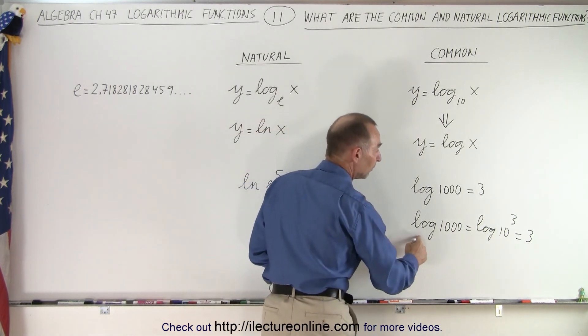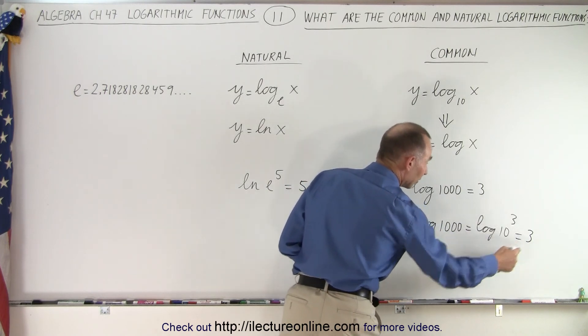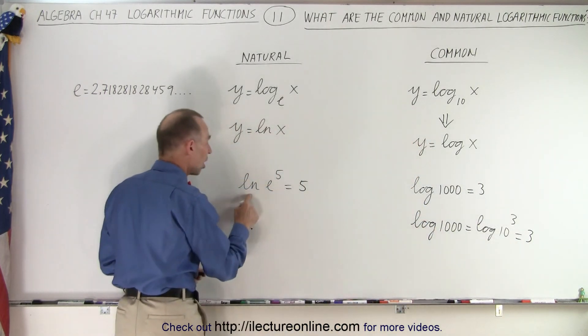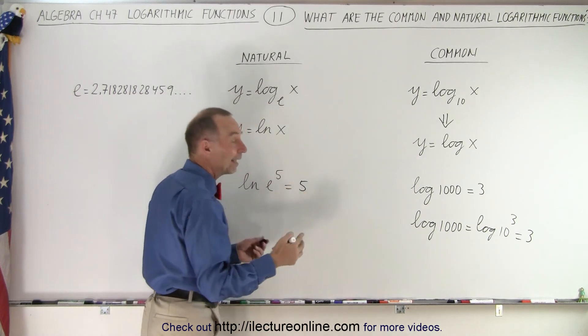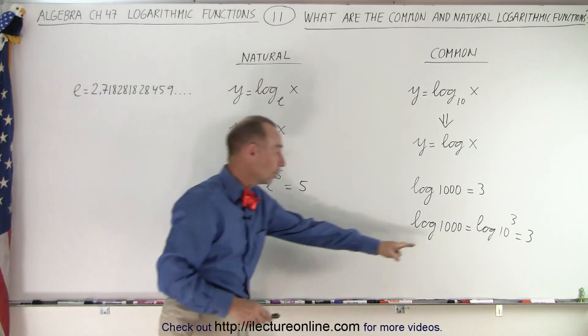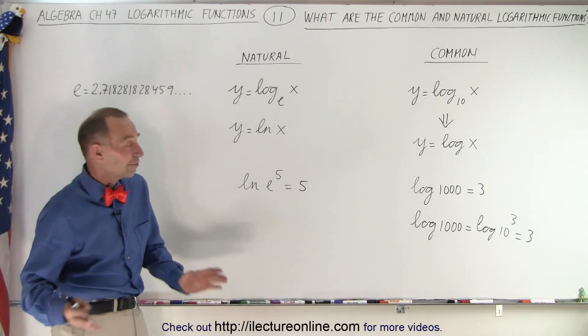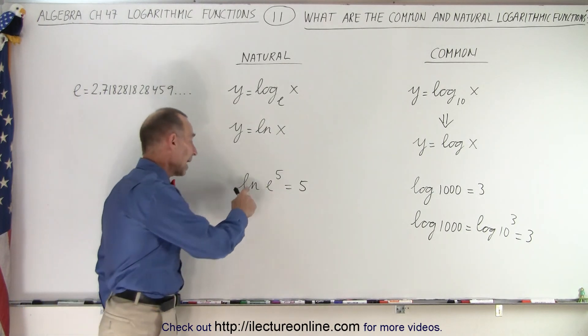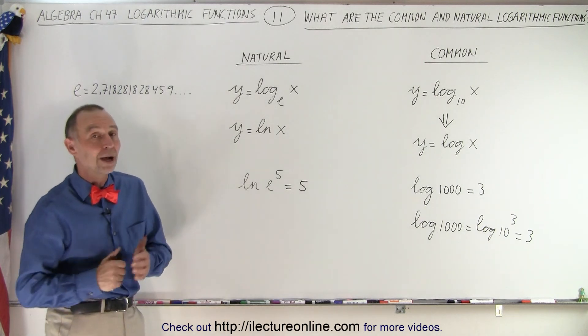So here we take the log, the common log, base 10 of 10 to the third power is equal to three. Here we take the natural log of base e to the fifth power, that's equal to five. And that's how we use the natural log. We don't write base e. And the common log, we don't write base 10. And now that you know that, from now on, we'll always write the natural log like this and the common log like that. And that is how it's done.